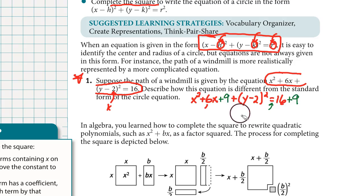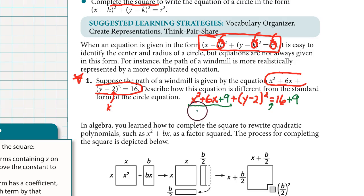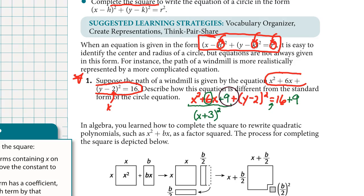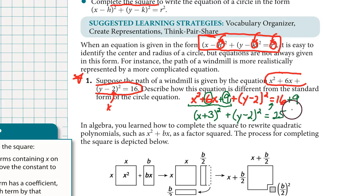Now we can rewrite our equation. Focusing on the letter x, we have a trinomial — a special kind called a perfect square trinomial — that can be factored. The pattern is to use parentheses with squaring, and inside the parentheses it's x plus 3. Remember, that 3 was half of the coefficient, and also the square root of 9. Then we copy the rest down: plus (y minus 2) squared equals 25. It used to be 16, but we added 9, so now it's 25.